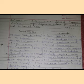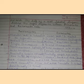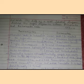In prokaryotes, DNA transcription and mRNA translation occur simultaneously in the cytosol. In eukaryotes, DNA transcription occurs in the nucleus and mRNA translation occurs in the cytosol — these two processes are separated in space and time.